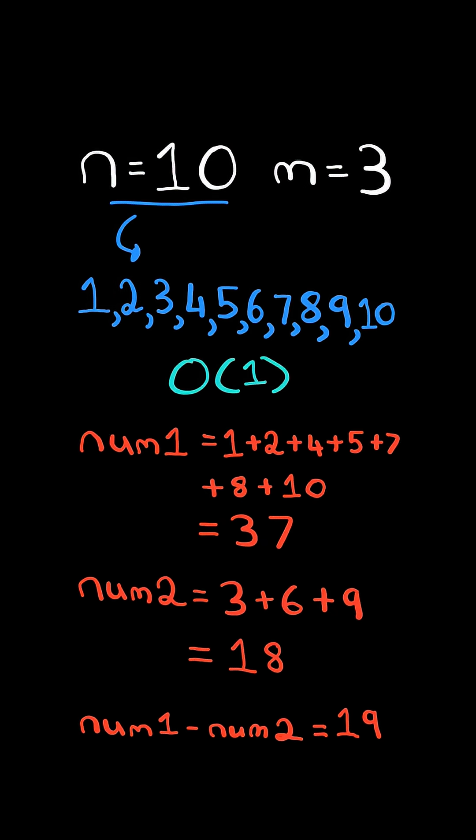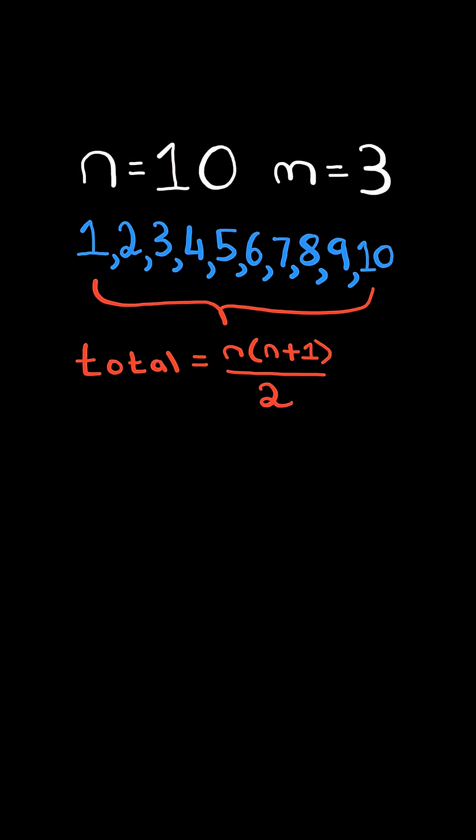We will solve this in constant time. First, consider the formula for the sum of numbers from 1 through n. This gives a total of 55.